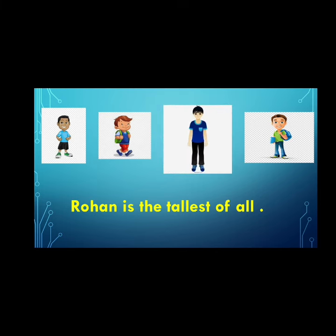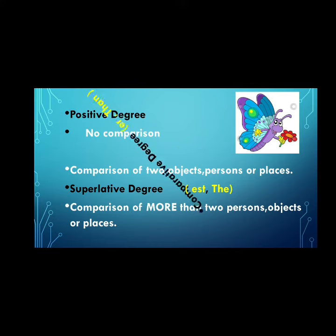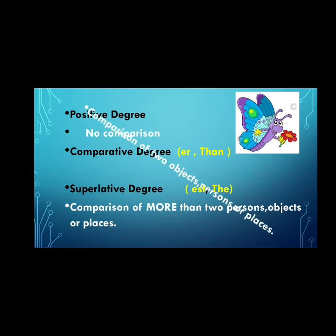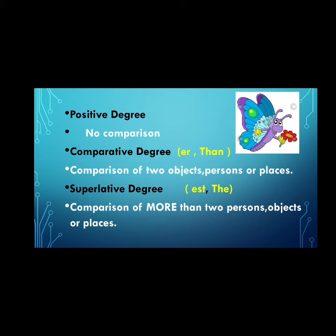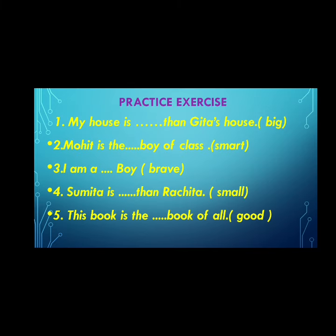Dear students, let's sum up today's topic. Positive degree — there is no comparison. Comparative degree — we use 'er' and 'than' for comparison of two things. In superlative degree, we use 'est' and 'the' for comparison of more than two things. Now dear students, practice these sentences at home.